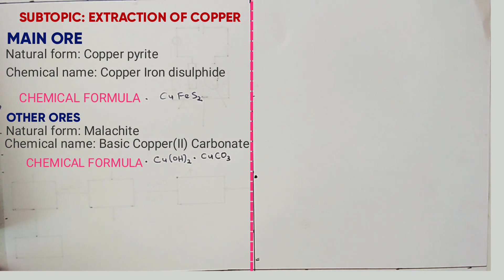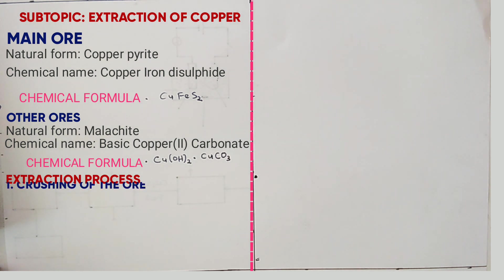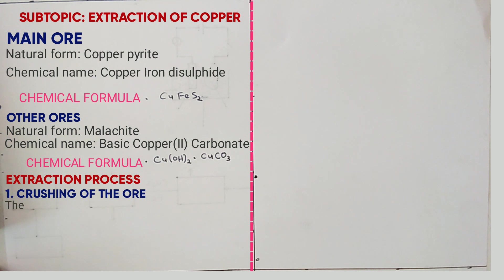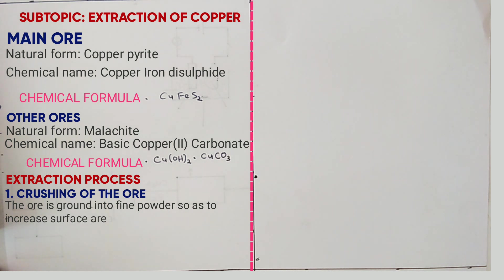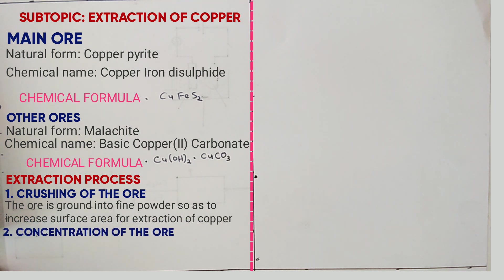The extraction process begins with number one: crushing of the ore. The ore is ground into fine powder so as to increase surface area for extraction of copper. Number two is concentration of the ore. The aim here is to remove impurities. This is done by what you call froth flotation.